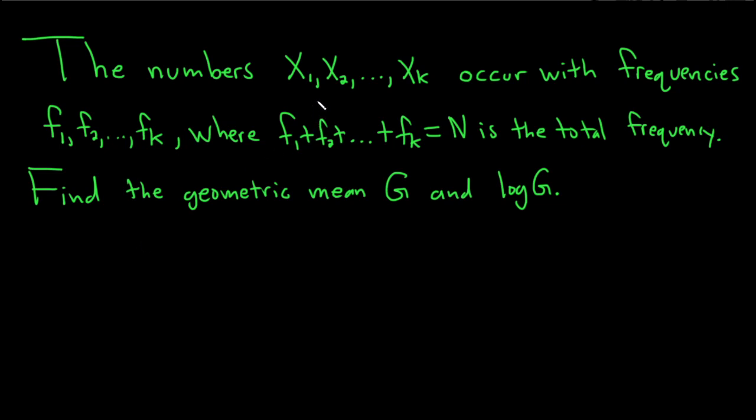The numbers x1 through xk occur with frequencies f1 through fk, where if you add up all the f's you get the total frequency N. Find the geometric mean G and log G.